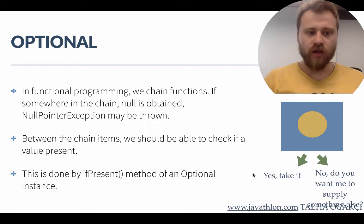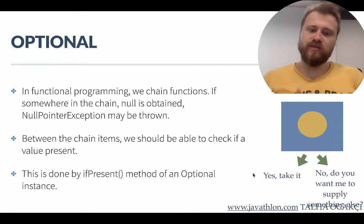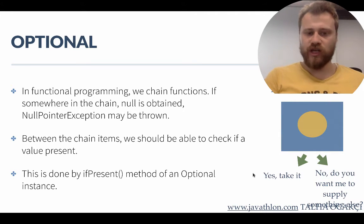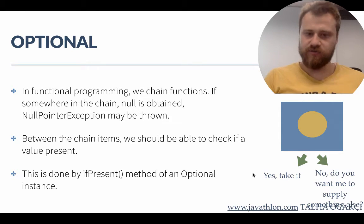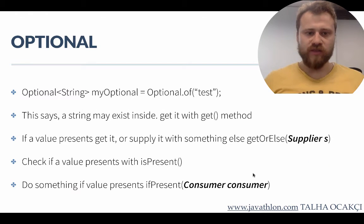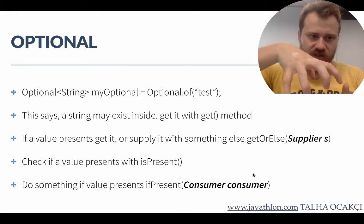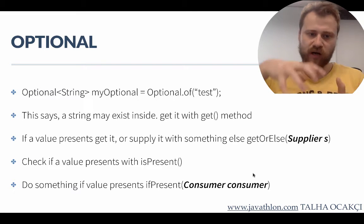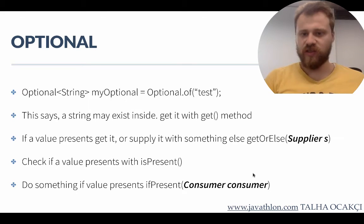To avoid this, we use the ifPresent method of the Optional class. We first check if there's an object inside the Optional structure using isPresent, and if one is present, we retrieve it using the get method. We wrap existing data in an Optional box and then acquire the object via get. In summary, an Optional is a box to check whether there's an object inside or not.